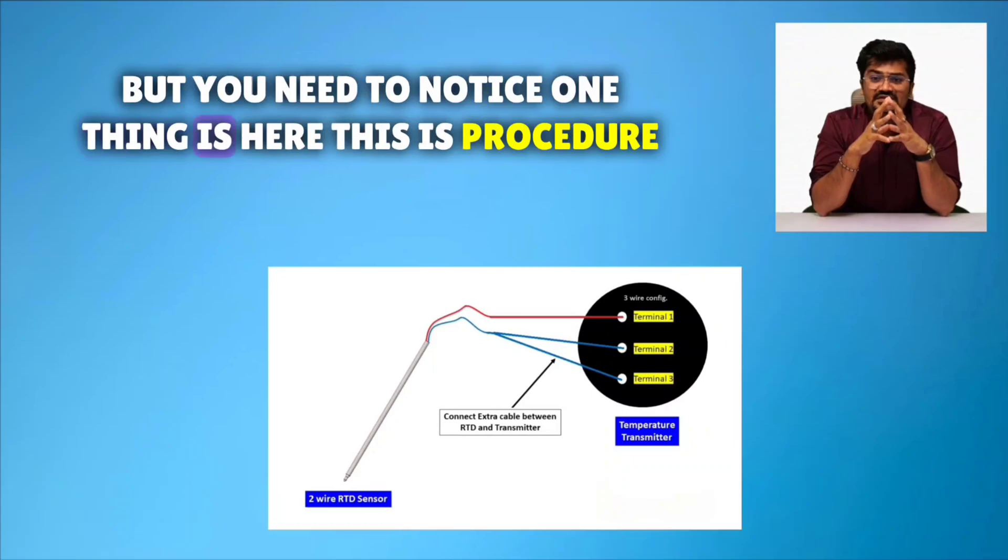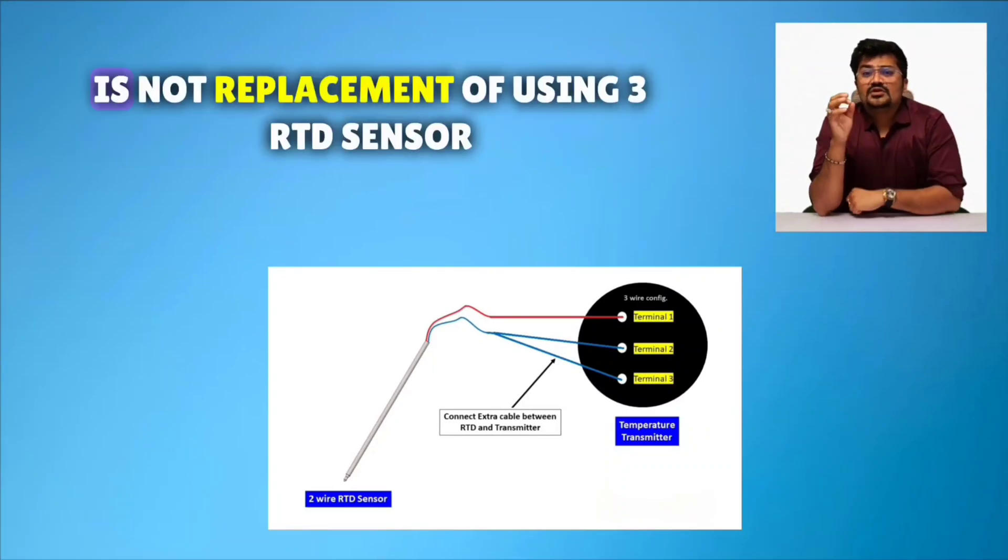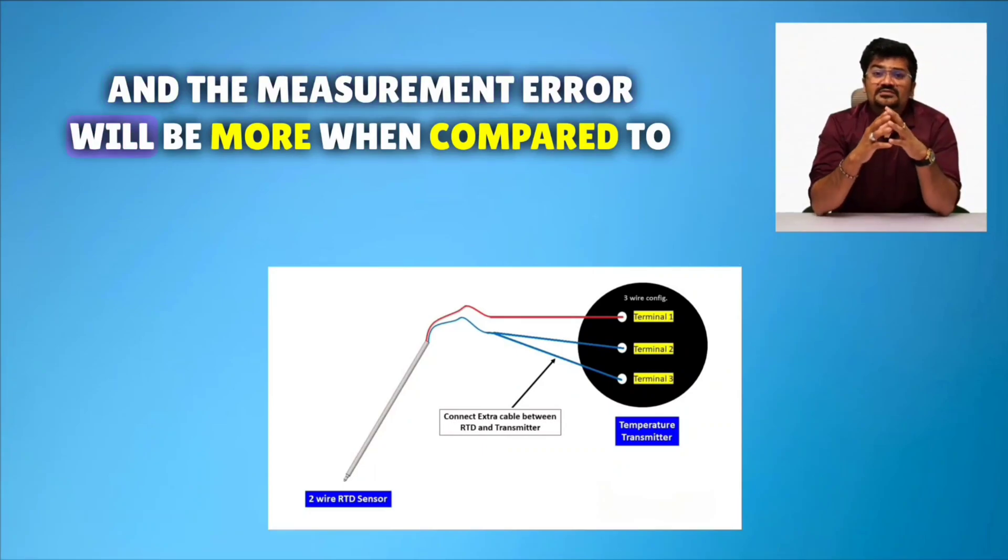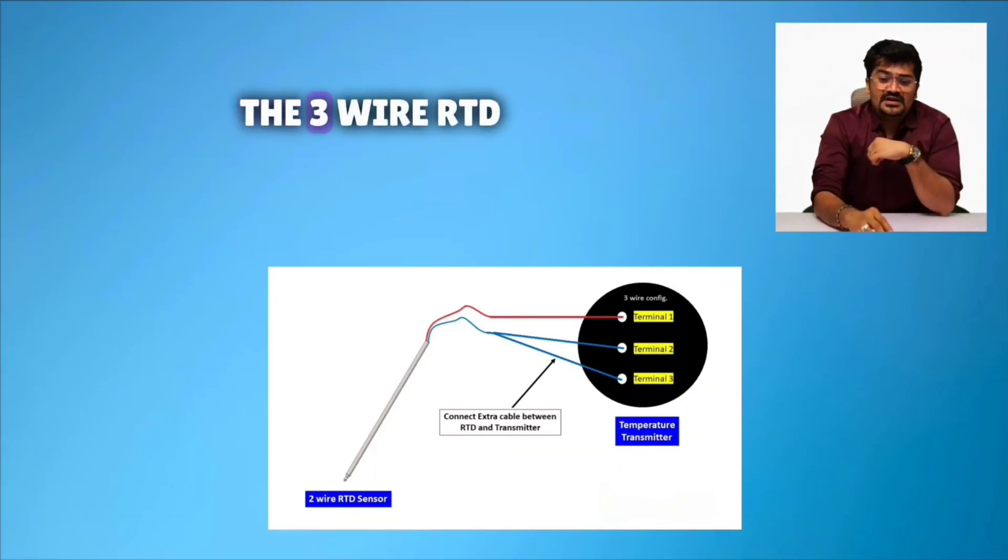You need to notice one thing here. This procedure is not replacement of using 3-wire RTD sensor. The measurement error will be reduced when compared to 2-wire RTD, and the measurement error will be more when compared to 3-wire RTD.